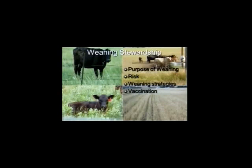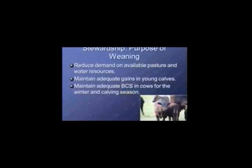I want to talk about four things, keeping each point very brief: why do we wean and the purpose of weaning; what risk is all about in terms of weaning stress and risk of respiratory disease; weaning strategies — different types of weaning; and finally, some things on vaccination.